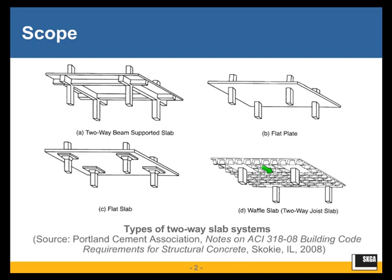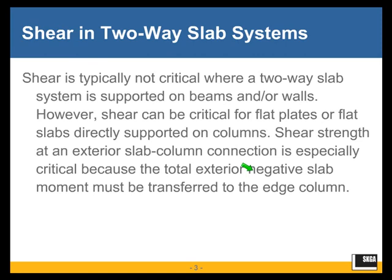For long spans, the two-way ribbed system, or waffle slab, was a popular choice, though they are not as popular as they used to be. Note that the slab is solid directly above the columns for reasons of punching shear. All these types of slabs are covered by what we will discuss in today's seminar — a broad scope covering all types of reinforced concrete slabs.